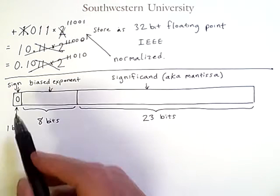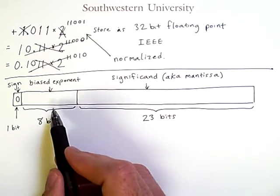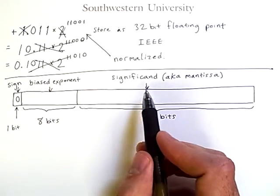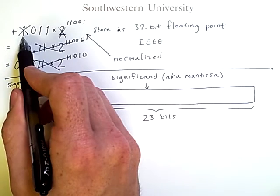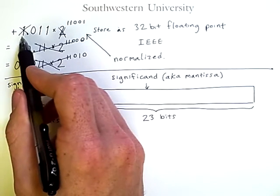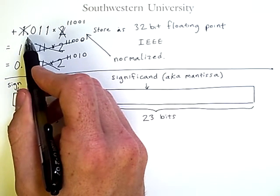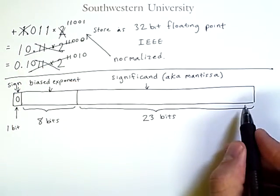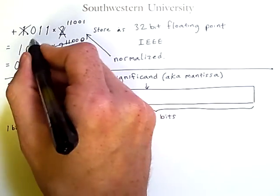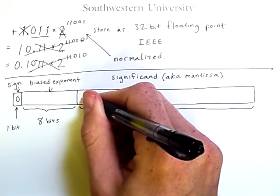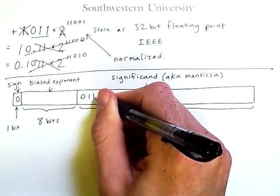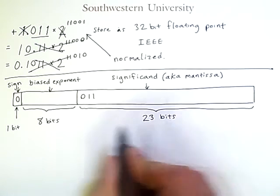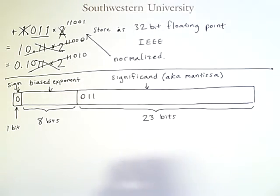So we have 1 bit for the sign, 8 bits for a biased exponent, and then 23 bits for the significand. We assume that we always have a 1 before the binary point, which makes the significand very easy to compute. We simply take these 3 bits — 0, 1, 1 — and then the remaining bits in the 23-bit space will be zeros.